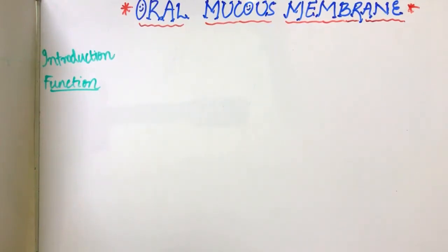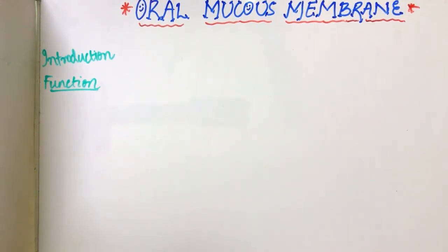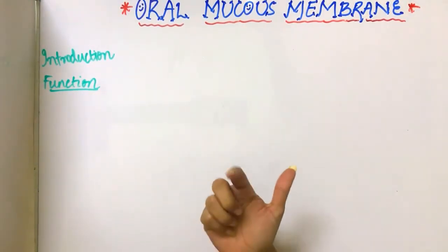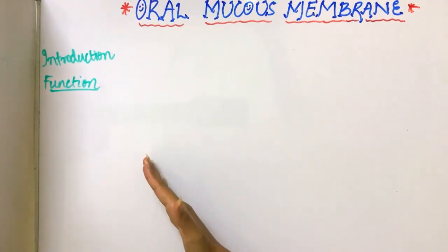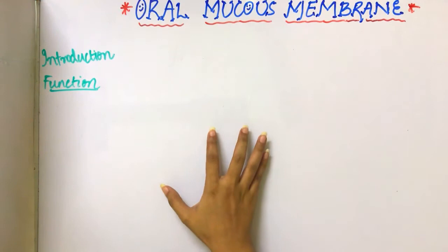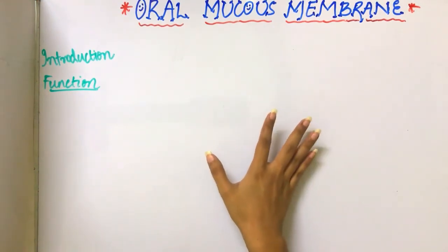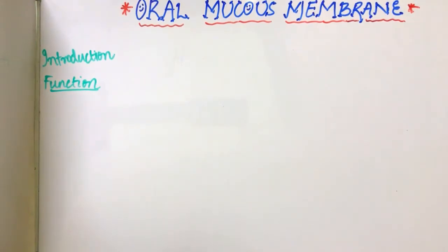Hello everyone, welcome back to my channel. Today's topic is oral mucous membrane. In this video we'll be covering the introductory part of oral mucous membrane, and in subsequent videos we'll discuss various cell components. So first of all, what is oral mucous membrane? It is a moist membrane lining the inside of the oral cavity, consisting of oral epithelium and the underlying connective tissue, which is the lamina propria.